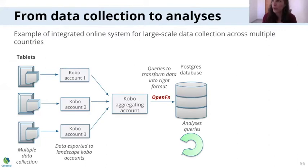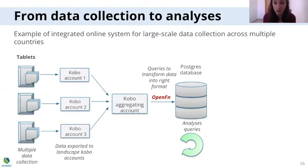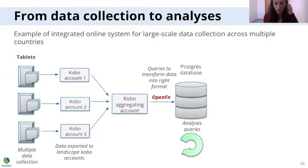For example, we use the Basic Necessity Survey — standard forms for monitoring wellbeing. We have a BNS aggregating account that gets all the BNS forms from everywhere. So you have all your forms and your data going into one single account, and this account is the one linked with the online Postgres database of WCS.